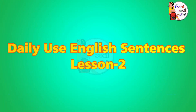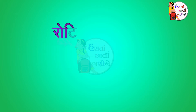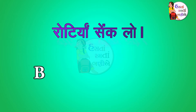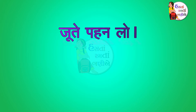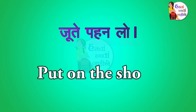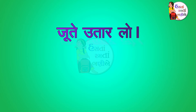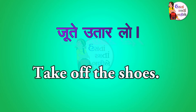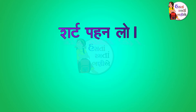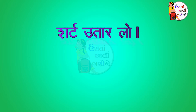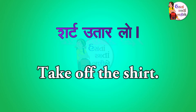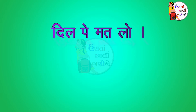Daily Use English Sentences, Lesson 2. Rotiyaan sikh loo — Bake the chapatis. Joothe pahan loo — Put on the shoes. Joothe utaar loo — Take off the shoes. Shirt pahan loo — Wear the shirt. Shirt utaar loo — Take off the shirt.